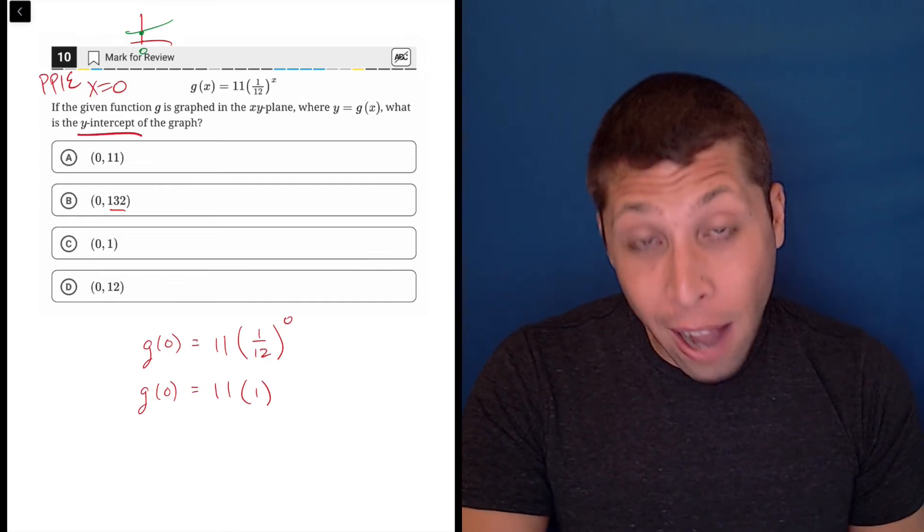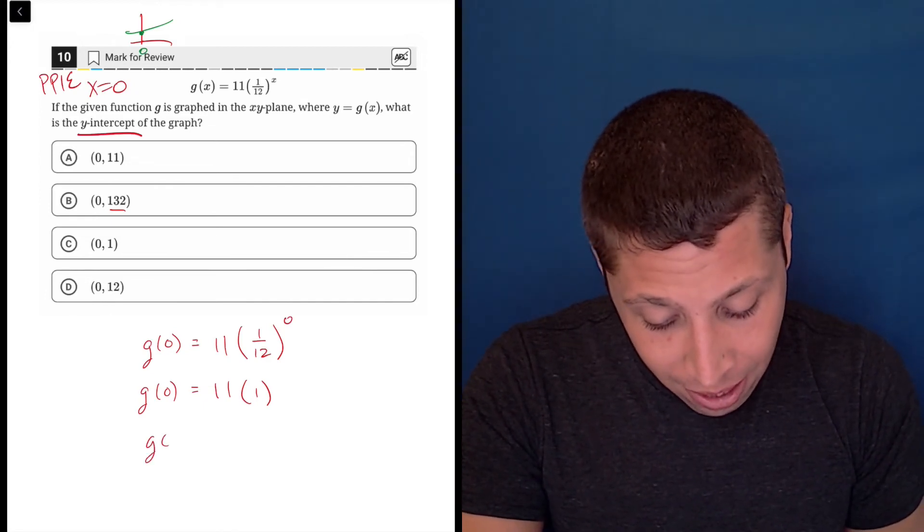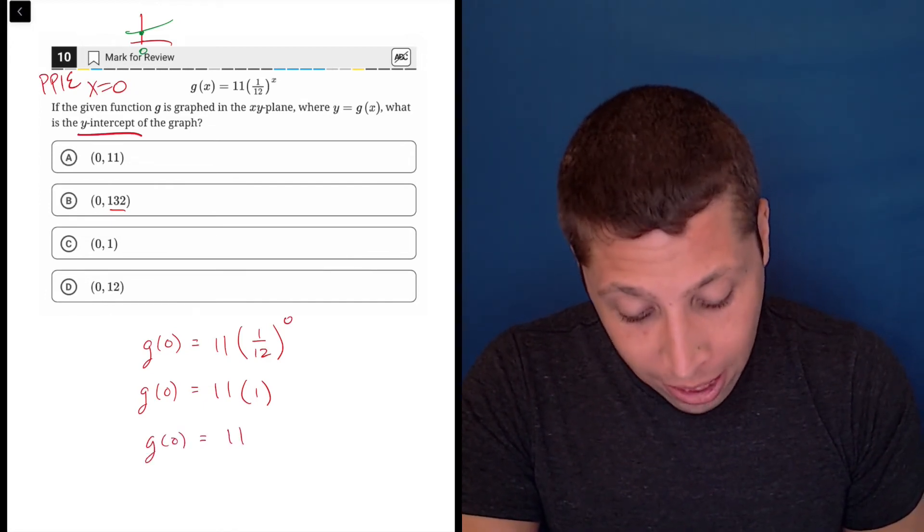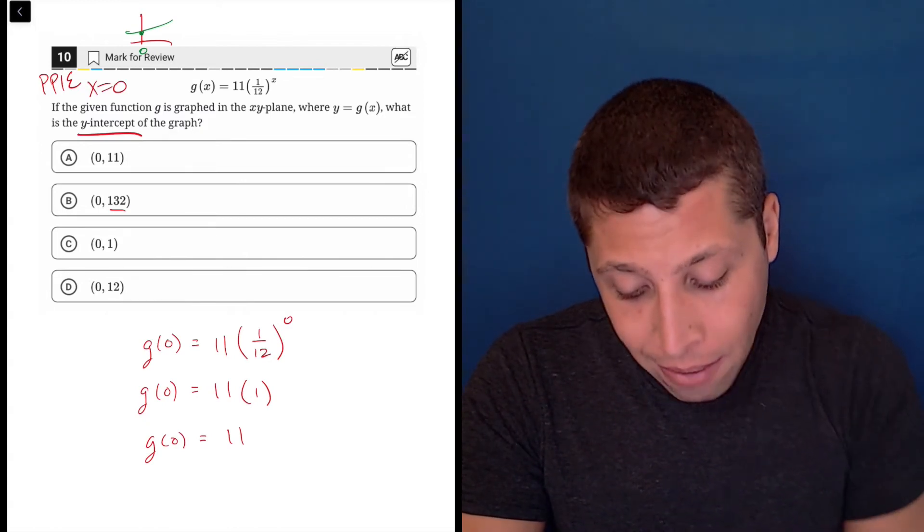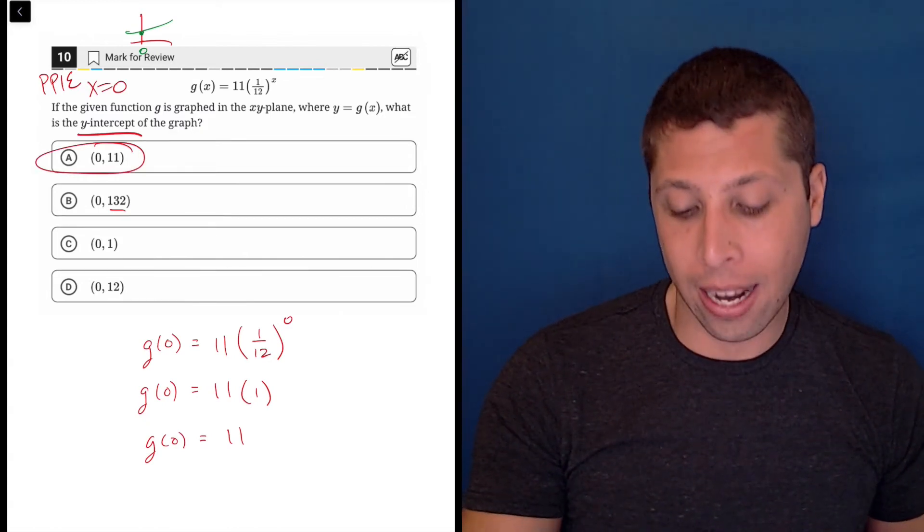Now, this question is just: what is 11 times one? Hopefully you don't need a calculator for that. The answer is 11. So that's our y-coordinate, and that is choice A.